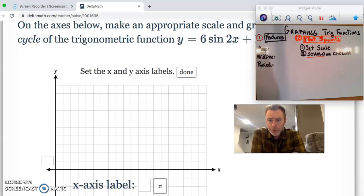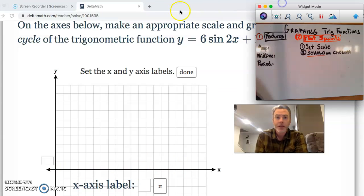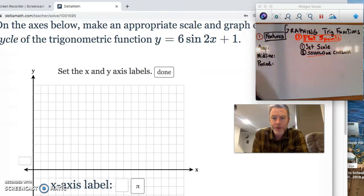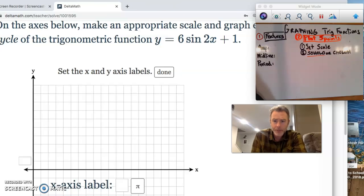Today's level is called Level 2. The reason why it's a bit spicier is you're going to see some midlines that are not y equals 0. So instead of counting up and down from the x-axis, we'll count up and down from where the new midline is. Let's take a peek here. Our first problem is y equals 6 sine 2x plus 1. We talked about what we do first - we write down features. We're going to write down the amplitude of this.